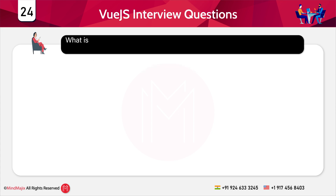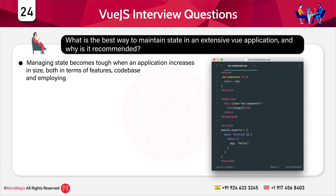The next question is: what is the best way to maintain state in an extensive Vue application? Managing state becomes tough when an application increases in size — employing an external network of downstream props and upstream events is not sensible. It becomes vital to transfer state management to a central management system. Vuex is the official state management library and a suggested paradigm for saving states centrally in the Vue ecosystem. Vuex allows for the preservation of a central state, and components use Vuex as a reactive data store. The same central state store can be used by multiple unrelated components as well.